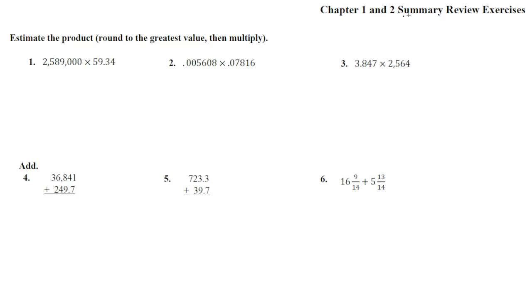Here we are in the chapter 1 and 2 summary review exercises, numbers 1 through 6. Number 1 says to estimate the product. Now remember what that means - we're going to round to the greatest value that's listed, and then do the easy problem.